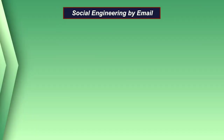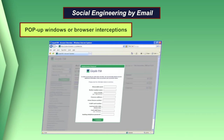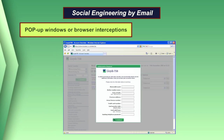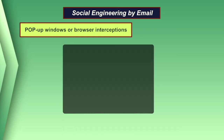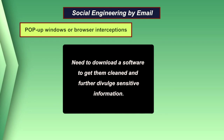Another example of social engineering by email is pop-up windows or browser interception. Pop-up messages inform the user that they have lost their network connection and need to re-enter their username and password, or that the system has been infected with malware and they need to download software to clean it, thereby divulging sensitive information to attackers.